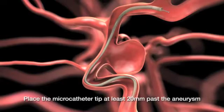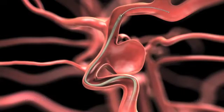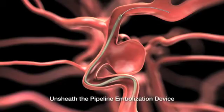It's brought up through the microcatheter and then unsheathed across the neck of the aneurysm within the parent artery, which in this case is the intracranial carotid artery.